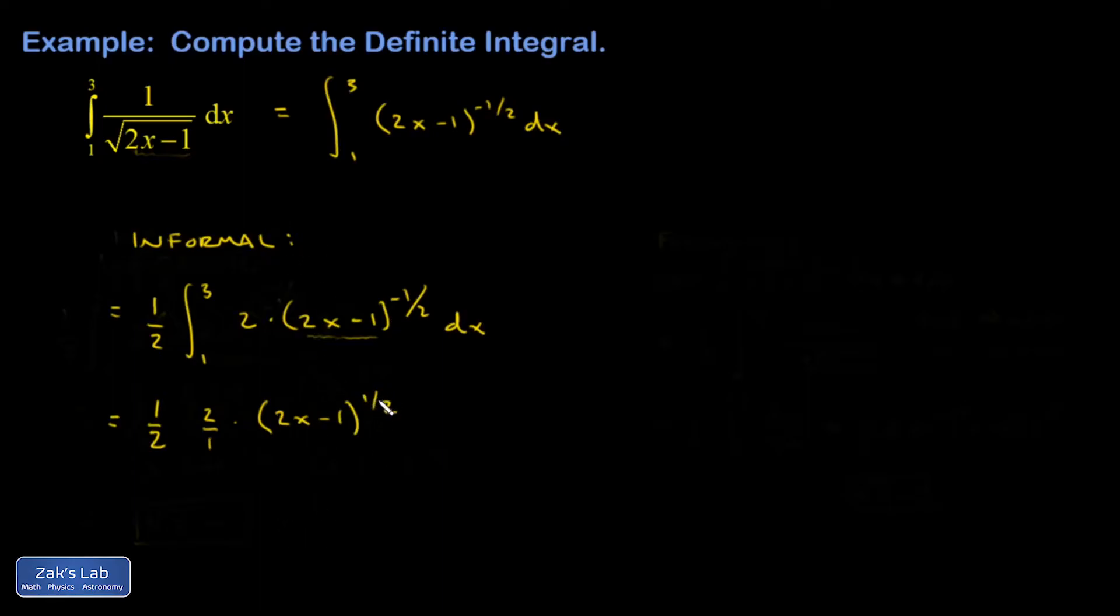So, if I differentiate this, bring down the one half, it kills that two. Subtract one from the exponent, I get an exponent of negative one half. Then the chain rule says you better tack on the derivative of the interior, which is that exact two that we set up at the beginning.